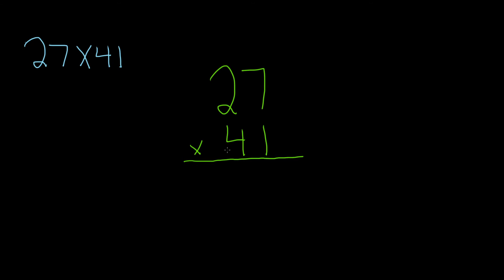You put a little x, this means we're going to multiply. And then you start with the 1. So you take 1 and you multiply it by 7. So 1 times 7 is 7. 1 times 2 is 2.